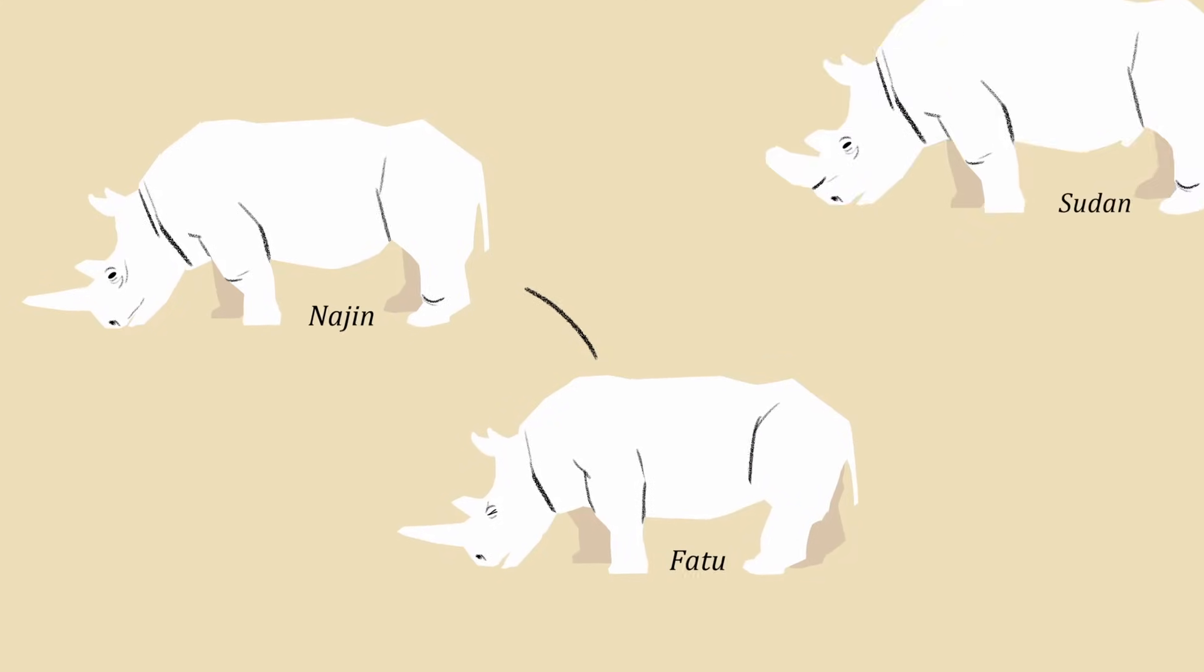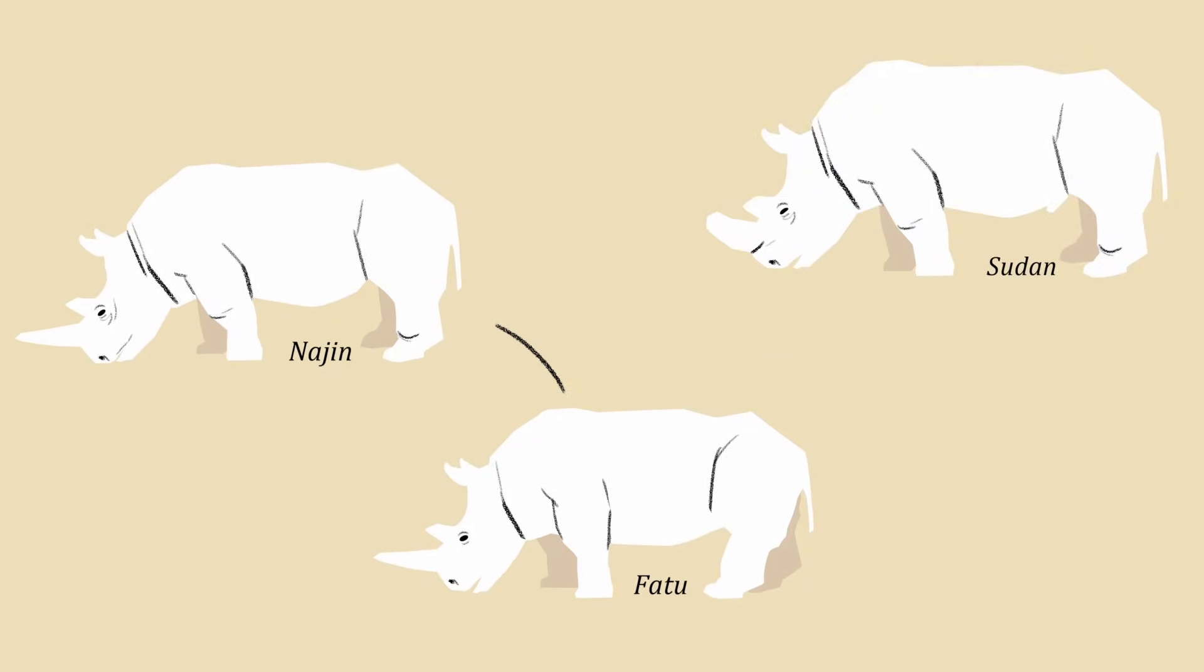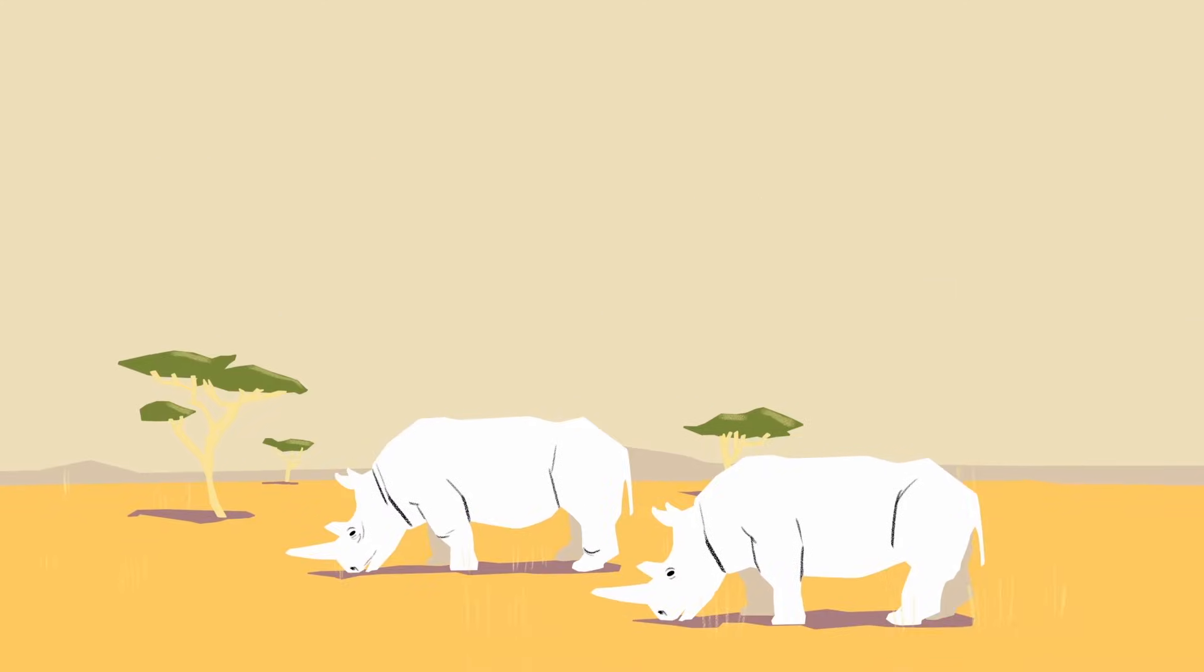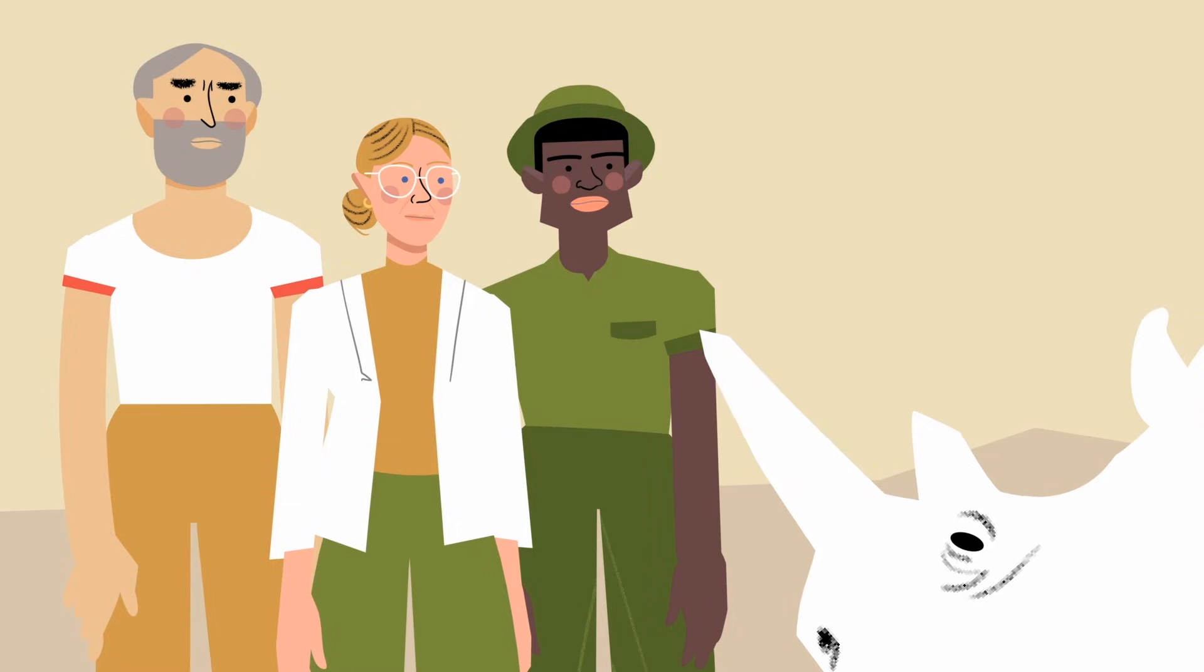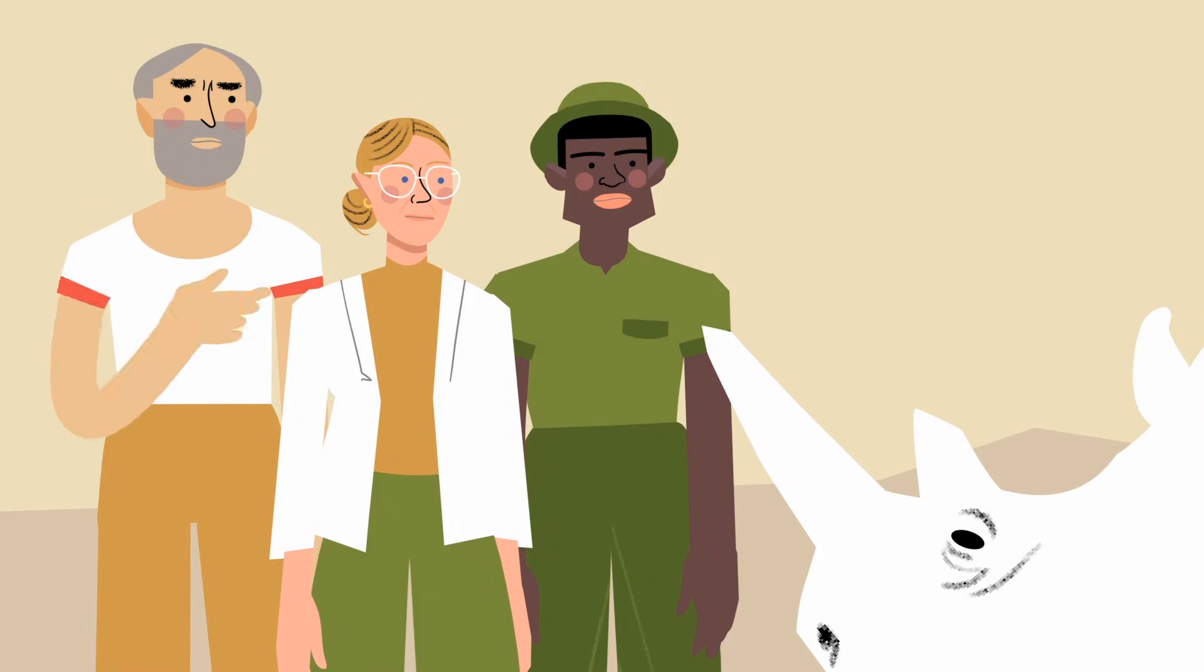Then, the last northern white rhino male of the species, Sudan, died in 2018. But there was one glimmer of hope—artificial reproduction. With no living males and no females able to carry a pregnancy, this is a complicated and risky process, to say the least.